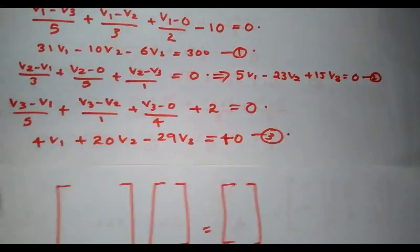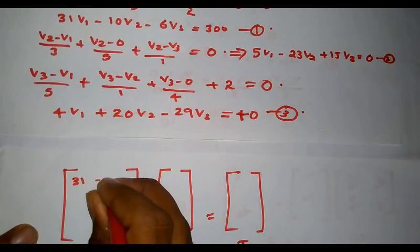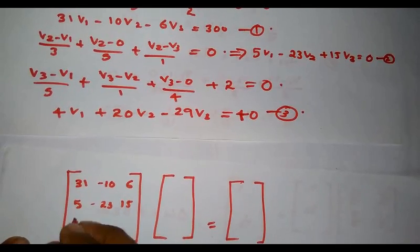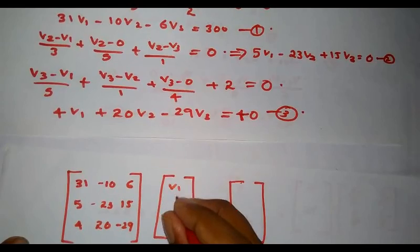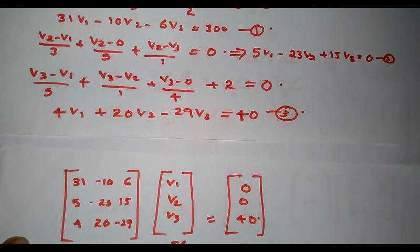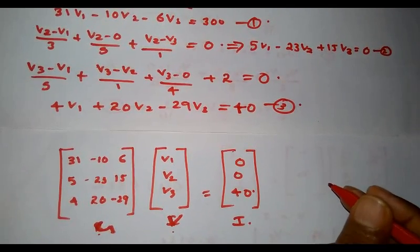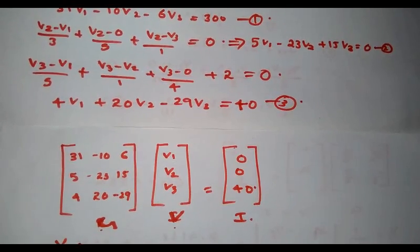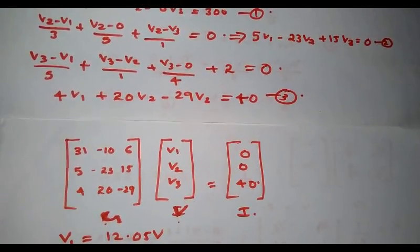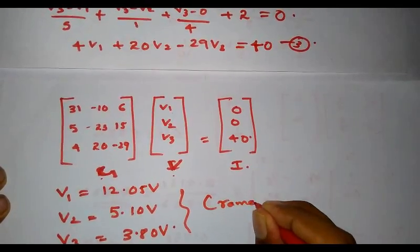We now have three nodal equations corresponding to three unknowns. These can be represented in matrix form as: [31, -10, -6; 5, -23, 15; 4, 20, -29] × [V1; V2; V3] = [300; 0; 40]. This is the system equation — conductance matrix times voltage matrix equals current matrix. By solving using Cramer's rule, we get: V1 = 12.05 V, V2 = 5.10 V, and V3 = 3.80 V.